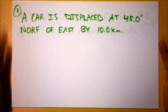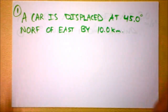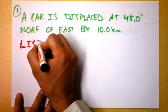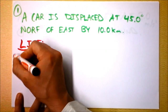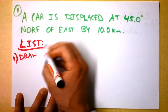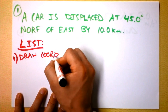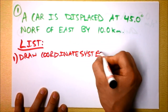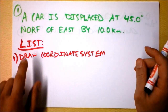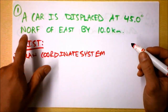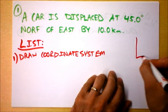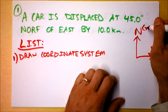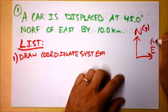For instance, this car is displaced at 45 degrees north of east by 10 kilometers. So let's make some lists — lists are good. Step one: draw. You'll probably want a coordinate system. For this particular problem it needs to have north and east, so I'll show north here and east here, associating north with my y-axis and east with my x-axis.